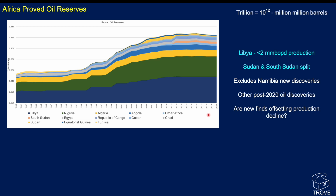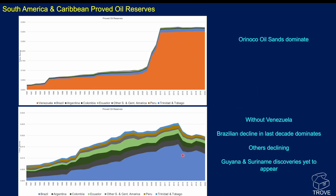Looking at South America and the Caribbean proved oil reserves, the top graph is really distorted by the Orinoco oil sands in Venezuela, which were committed as reserves around the 2007–2009 period and have become extremely significant, though few are currently being produced. If we take out Venezuela, we see quite a lot of decline in the last decade, with Brazil being the main source of that decline. This also doesn't include reserves and discoveries coming from Guyana, Suriname, and other parts of the region since 2020.